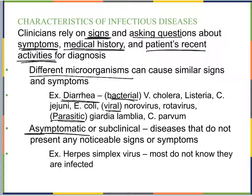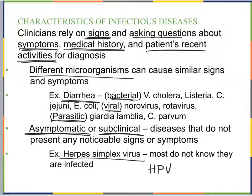Sometimes diseases are asymptomatic, also called subclinical — they do not present any noticeable signs or symptoms. Examples include herpes simplex virus and HPV. Most people carry HPV infection but never have a reaction or symptoms, so they are asymptomatic even though colonization has occurred.